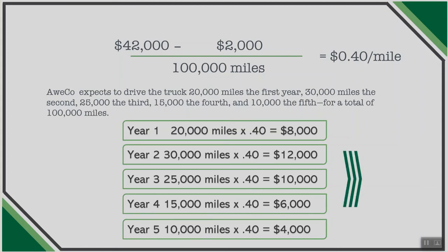Adding up all depreciation expense over the five-year use of the asset gives a total of $40,000. Similar to the other methods, units of production uses the same journal entries: a debit to depreciation expense for the computed value and a credit to accumulated depreciation.